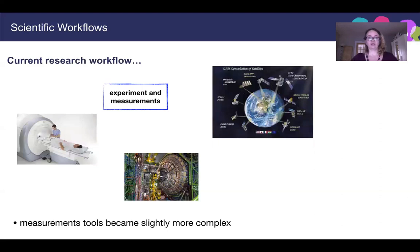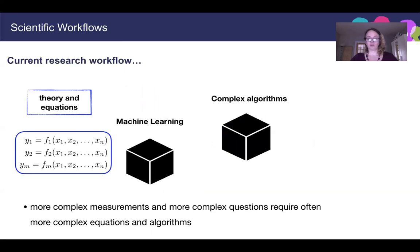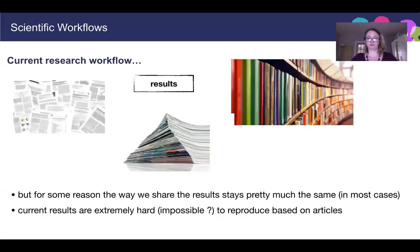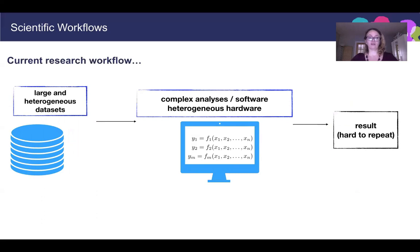How does the scientific workflow look now? First of all, we changed the tools — measurement tools became much more complex. More complex measurements and more complex questions require more complex equations and algorithms. In order to use these algorithms on our data, we extensively use computers and we need bigger groups of scientists and software developers. Yet the way we share results is pretty much the same, which has led to a situation where results are extremely hard, if not impossible, to reproduce based on the article. We now have large and heterogeneous data sets, complex analysis and software, heterogeneous hardware, and results that are very hard to repeat.